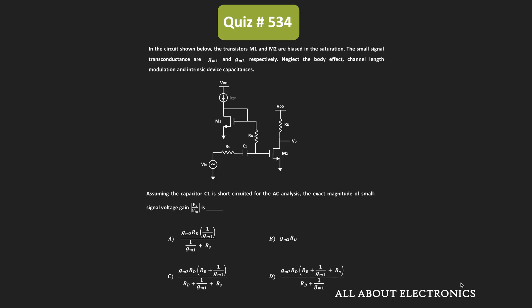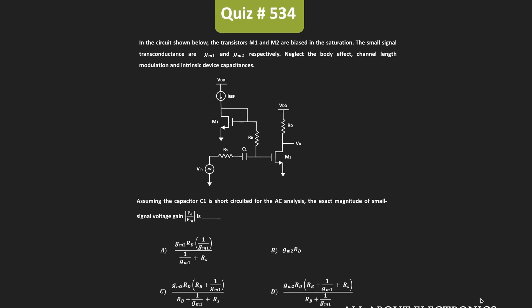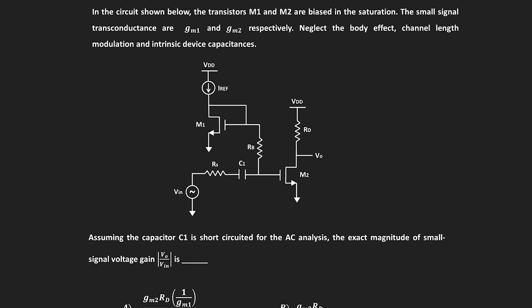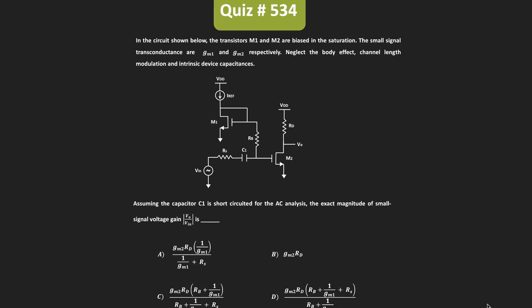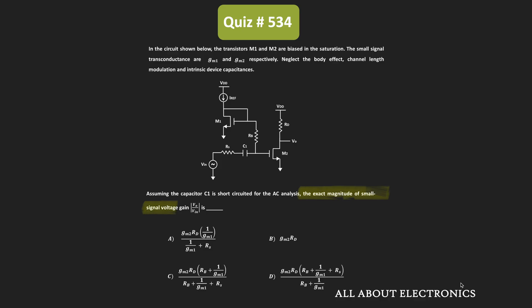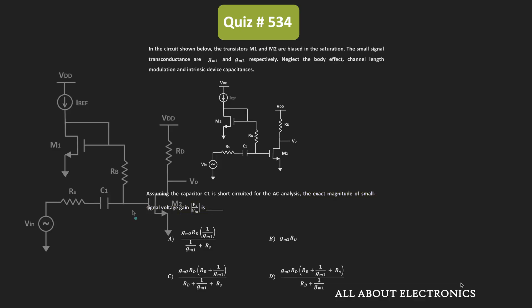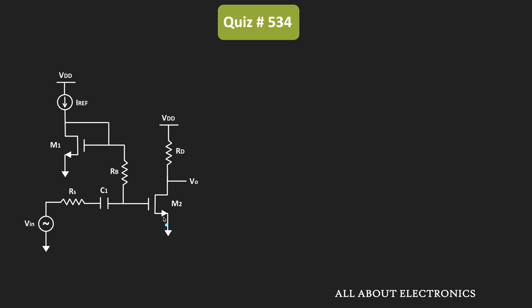Welcome to the YouTube channel all about electronics. In this question we've been given a MOSFET-based circuit where two MOSFETs M1 and M2 are biased in saturation. We've been asked to find the exact magnitude of the small-signal voltage gain. The small-signal transconductances for M1 and M2 are gm1 and gm2 respectively, and we are to neglect the effect of channel length modulation as well as the body effect for both MOSFETs.